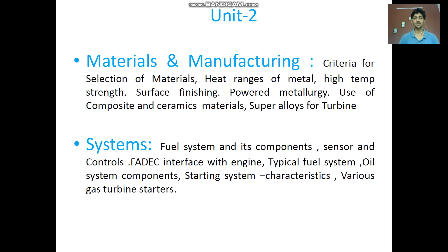In materials and manufacturing, the topics include criteria for selecting a material. In gas turbine engines there are different major components and sub-components which are exposed to different ambient conditions — some exposed to high temperature conditions, some to high mechanical load conditions. Based on these different conditions, materials are selected, and the criteria to be considered are discussed in this module.